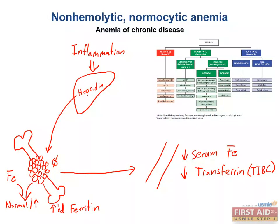Of note, if this occurs for a long period of time, anemia of chronic disease can present like iron deficiency anemia and be microcytic and hypochromic — it is not always normocytic. One can distinguish between iron deficiency anemia and anemia of chronic disease by looking at ferritin levels. Ferritin will be low in iron deficiency because stores are low, and high in anemia of chronic disease because stores are high.